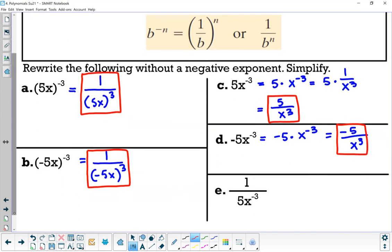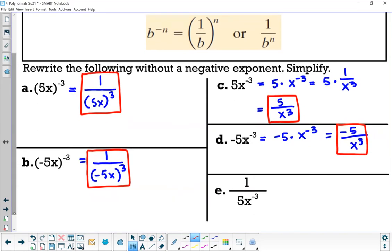And letter E, you have one over five times x to the negative three, which again is equal to one over five times x to the negative three. So when you're taking the reciprocal, it's only for x to the negative three, so it's x cubed over five.